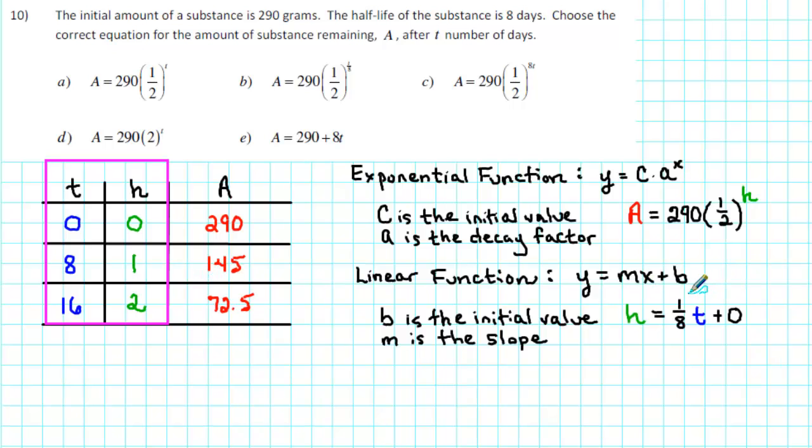Therefore, H equals 1 eighth of T plus 0. You might also notice that we can just take the value of T and divide by 8. 0 divided by 8 is 0, 8 divided by 8 is 1, 16 divided by 8 is 2. So we can simplify our function to H equals T divided by 8.